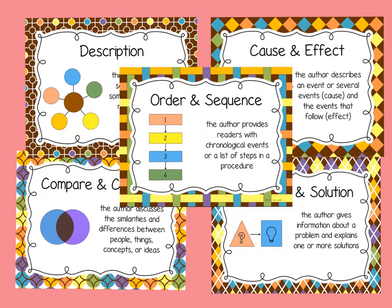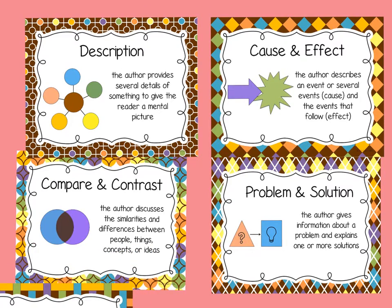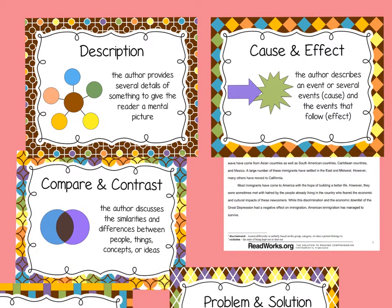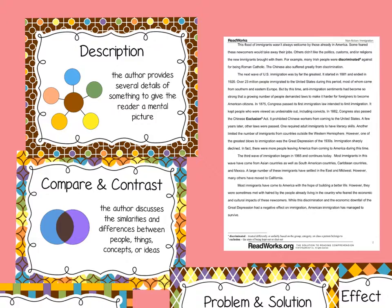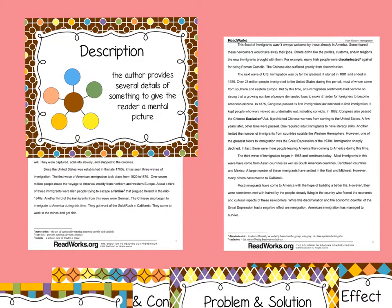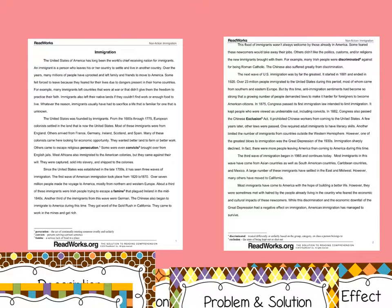Before you start this video lesson, make sure that you've reviewed all five different types of text structures, which are order and sequence, problem and solution, cause and effect, compare and contrast, and description. Then take a look at the text selection that we read on immigration and discuss with others what type of structure you think this text has overall.